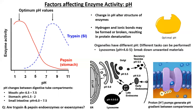Another example of a factor affecting enzymatic activity is pH. Changes in pH will alter the structure of enzymes. Just like with temperature, if you increase or decrease pH too much, some hydrogen and ionic bonds will be formed or broken, and that will result in protein denaturation. So we get the same problem as with temperature.